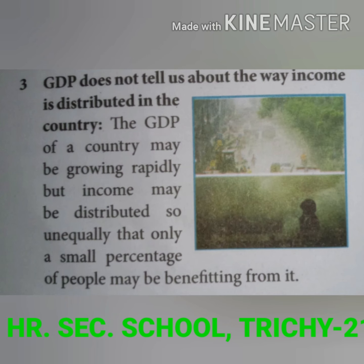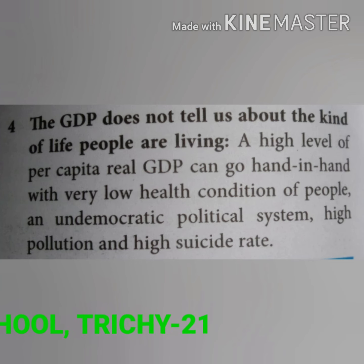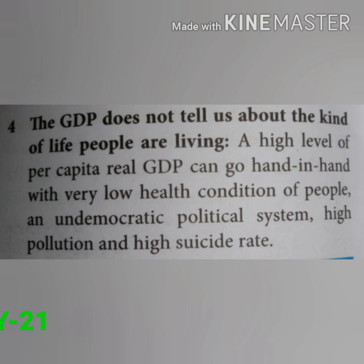The third limitation is that GDP does not tell us about the way income is distributed in the country. A country's GDP may be growing rapidly, but income may be distributed so unequally that only a small percentage of people benefit. The fourth limitation is that GDP does not tell us about the kind of life people are living. A high level of per capita real GDP can go hand in hand with very low health conditions, an undemocratic political system, high pollution, and high suicide rates.